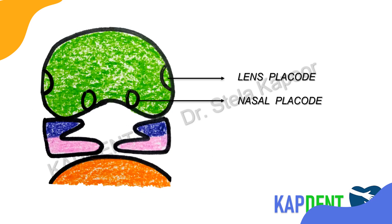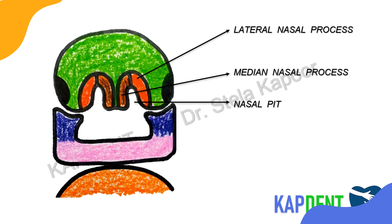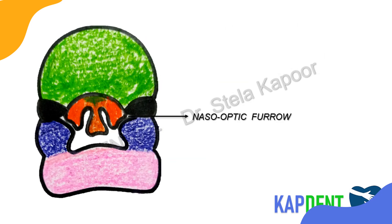Observe the thickenings developed in the frontonasal process — namely the nasal placodes and the lateralmost thickenings, the lens placodes. The nasal placodes then form a pit which communicates with the stomodium, and simultaneously thickens and differentiates to form the median nasal process and lateral nasal process. The median processes fuse in the midline, and as these structures move inferiorly, the lens placodes shift towards the midline. The mandibular processes fuse in the midline.